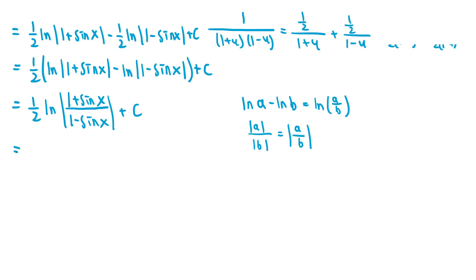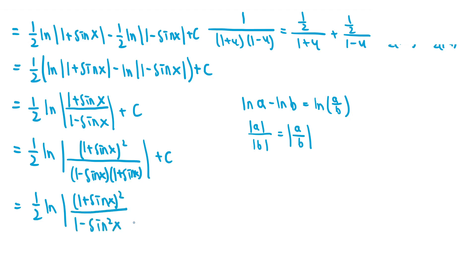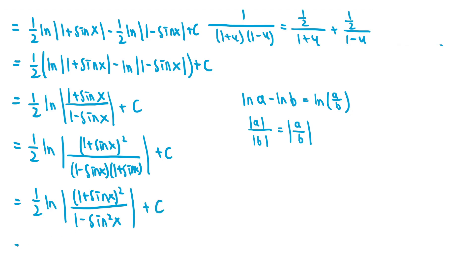To simplify further, we multiply both the top and bottom of the fraction by 1 plus sin x. The fraction becomes 1 plus sin x all squared over 1 minus sin x times 1 plus sin x, which simplifies to 1 plus sin x all squared over 1 minus sin squared of x. Using the Pythagorean identity 1 minus sin squared x equals cosine squared x, this simplifies to 1 plus sin x all squared over cosine squared of x.